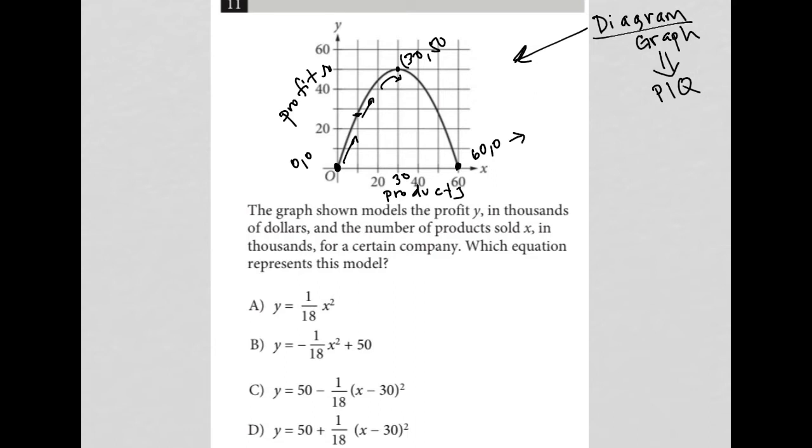For instance, this 60 comma zero means when X equals 60, Y must equal zero in the correct answer choice. And it should only work in the correct answer choice, or at least all three of these things should only work in the correct answer choice. So I could try that with X equals zero, Y equals zero. I can try that with X equals 30, therefore Y must equal 50. I'm going to use X equals 60 and Y equals zero.